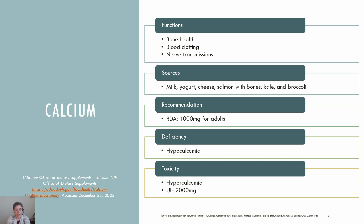The RDA for calcium is 1,000 milligrams for adults. Hypocalcemia, or low blood levels of calcium, is usually due to a deficiency of vitamin D or magnesium, which impairs parathyroid hormone production and bone resorption of calcium. Other causes include certain medications or critical illness. A deficiency can lead to reduced bone strength and osteoporosis. It can also cause rickets in kids and osteomalacia in adults or children. The UL for calcium is 2,000 milligrams per day. Hypercalcemia, which is elevated blood levels of calcium, can be due to cancer or hyperparathyroidism.